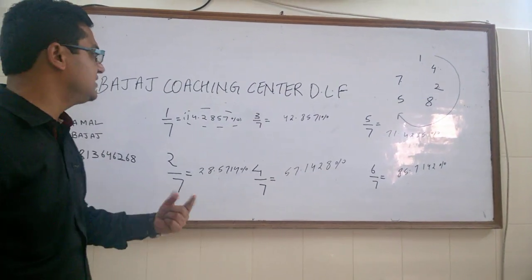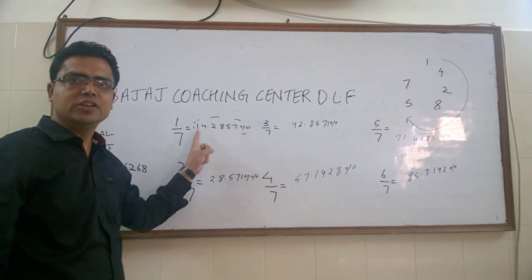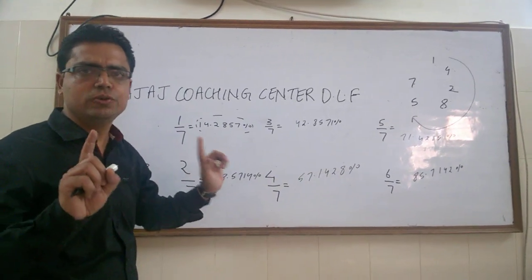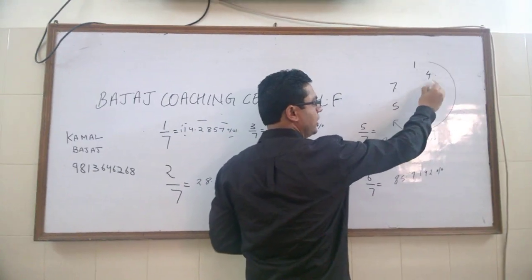If we find three by seven, 14 times three is 42. Then our answer is 42. Then it should start with 4. The answer is 42.8571.